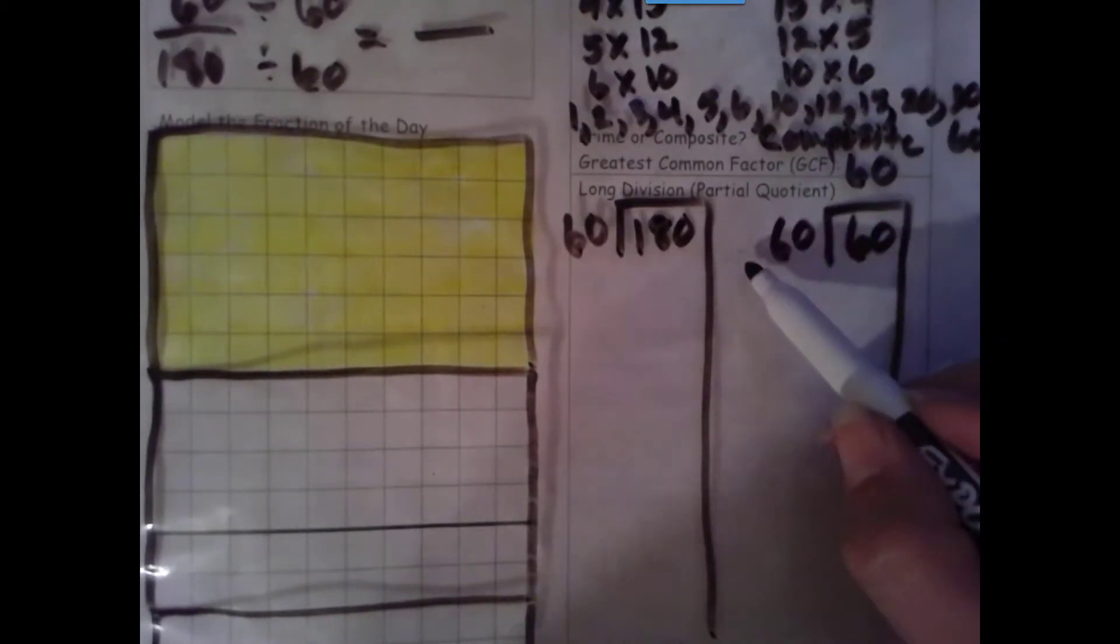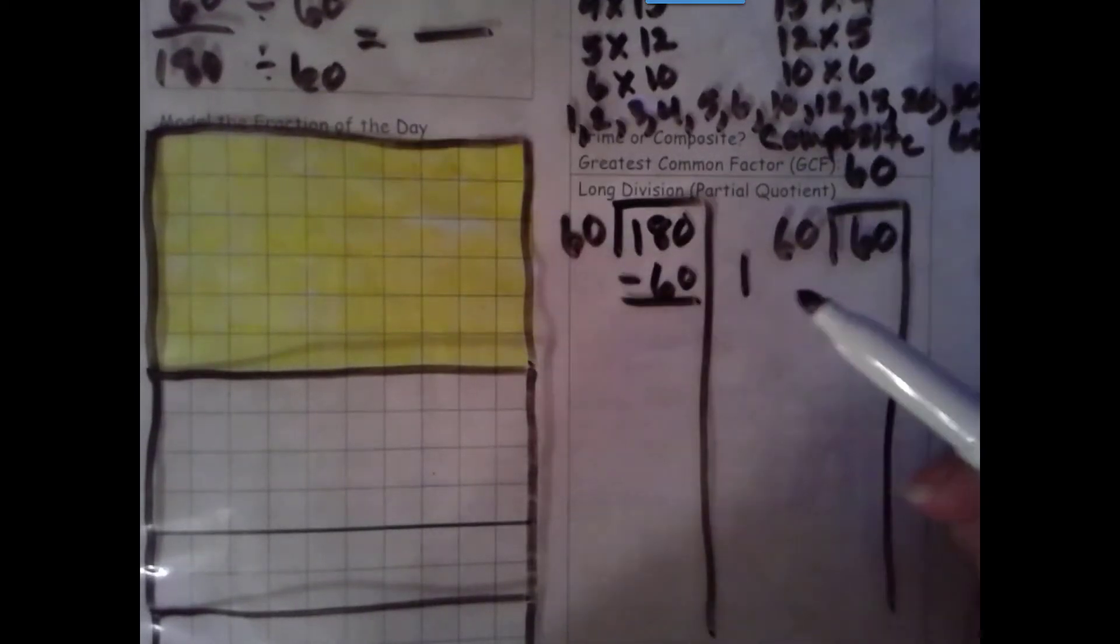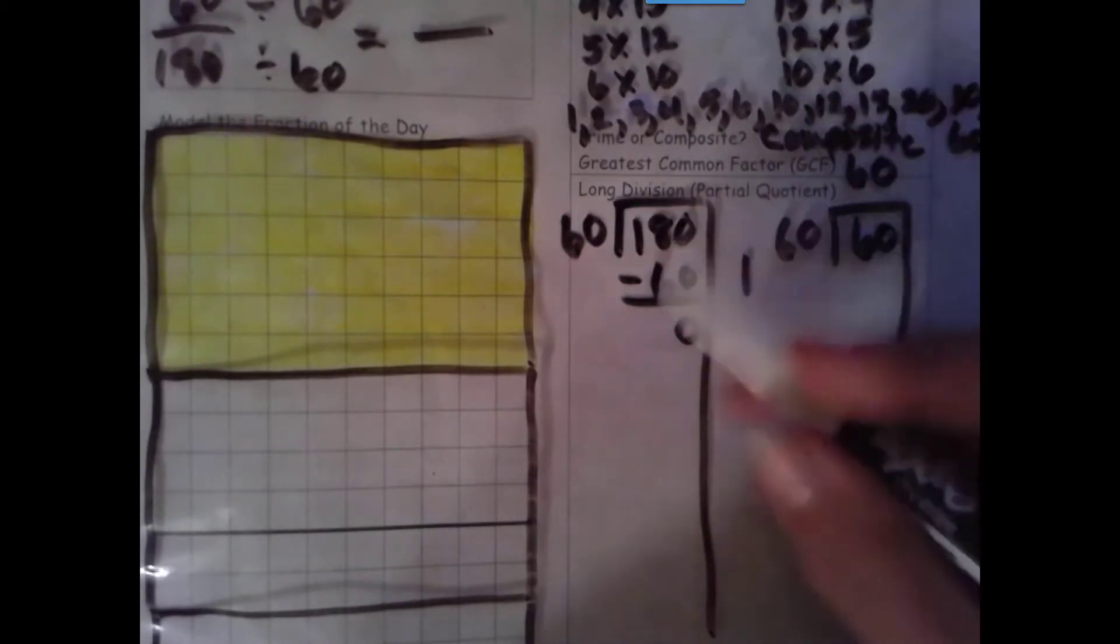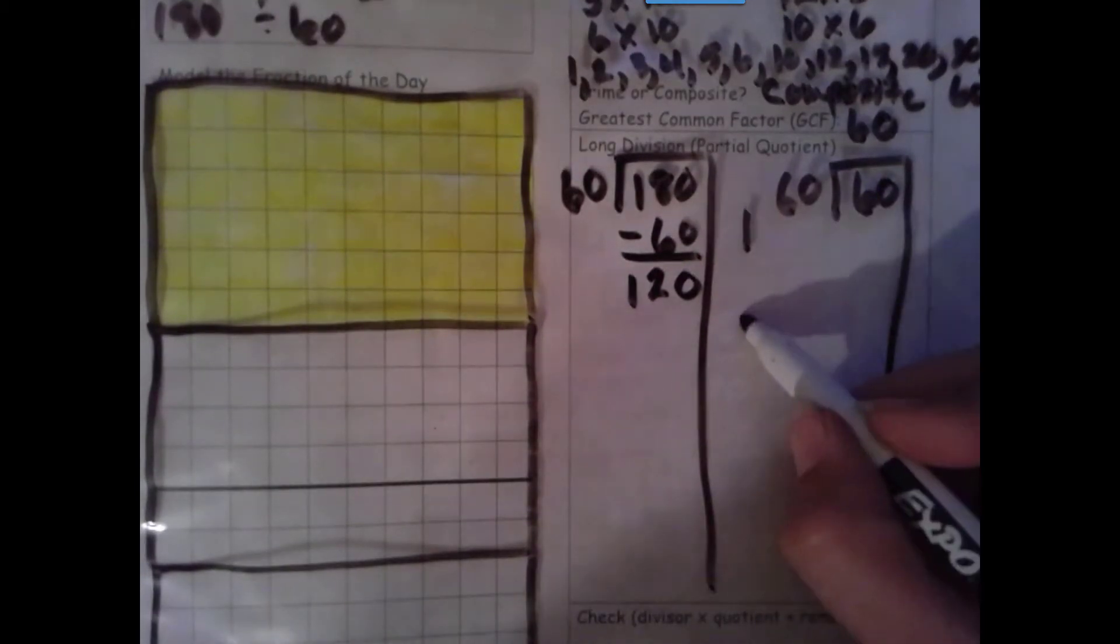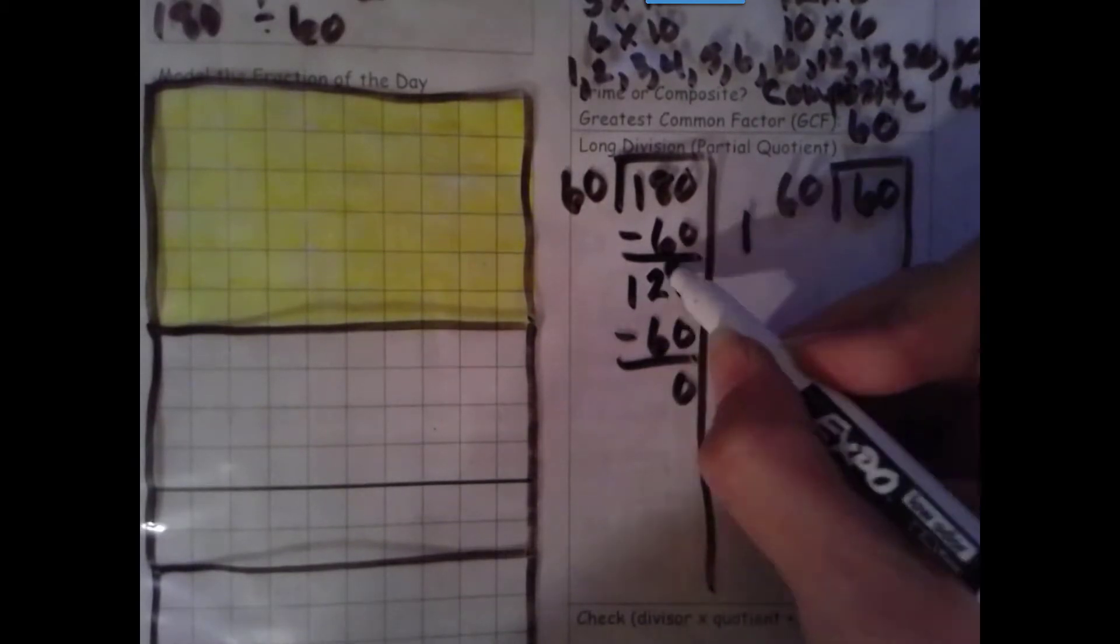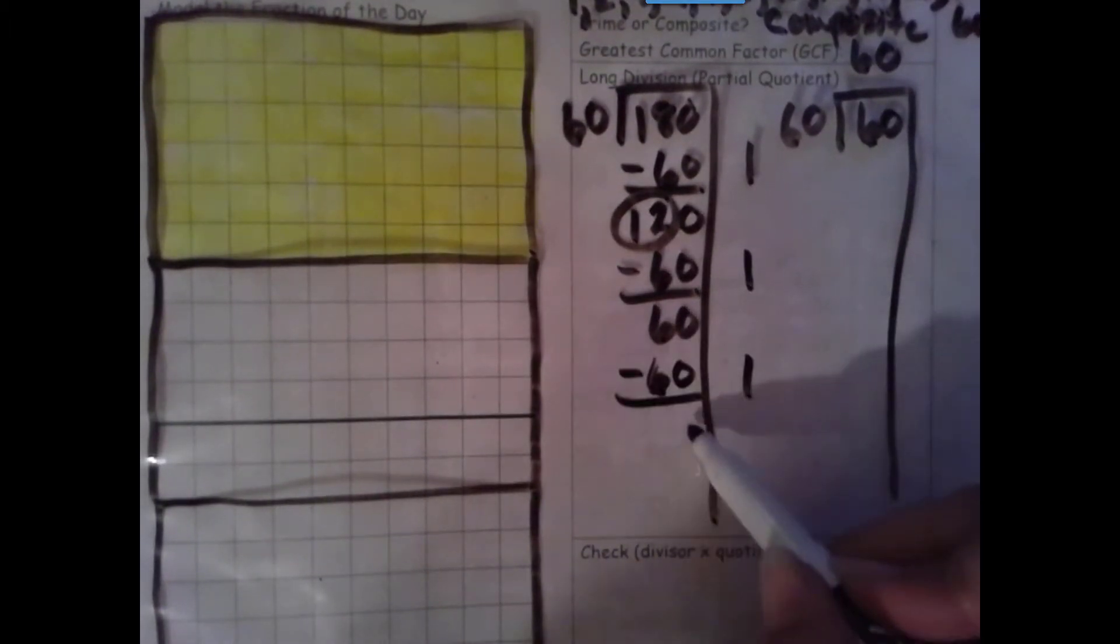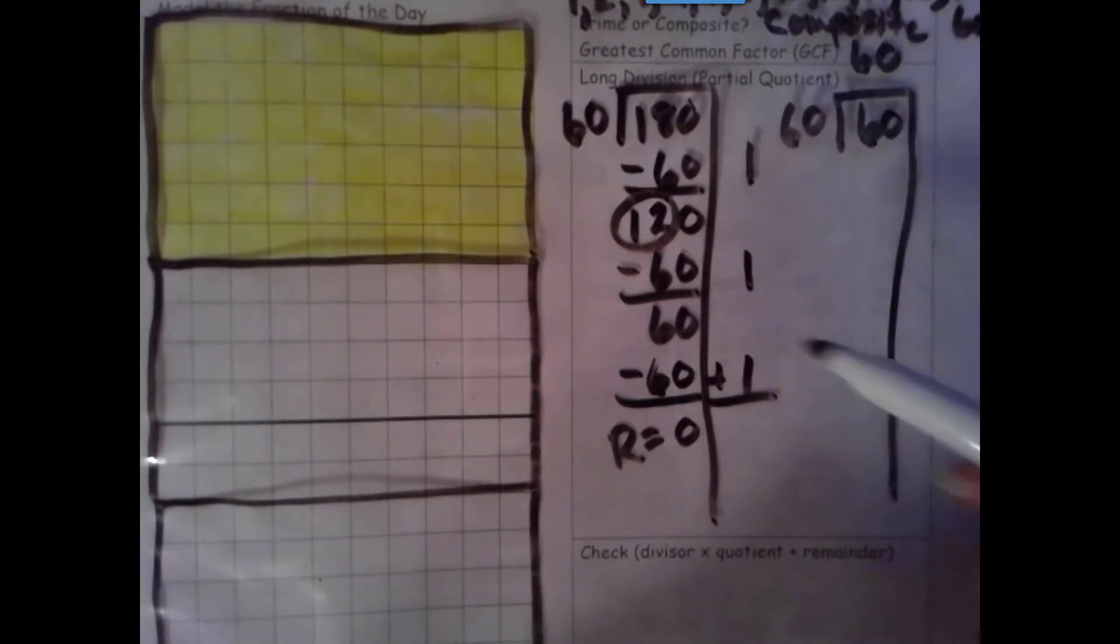180 divided by 60 and 60 divided by 60. I don't know my 60s necessarily, so 1 times 60 is 60. Take out the groups you can. It's repeated subtraction. We just want to try to take out the largest groups we can. Number's the same, zeroes the game. More on top, no need to stop. 1 times 60 is 60. Number's the same, zeroes the game. 12 take away 6 is 6. And 1 times 60 is 60. Number's the same, zeroes the game. Add those partial quotients together: 1, 2, 3.